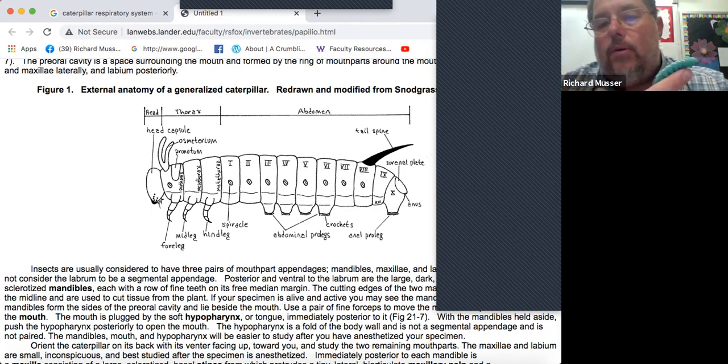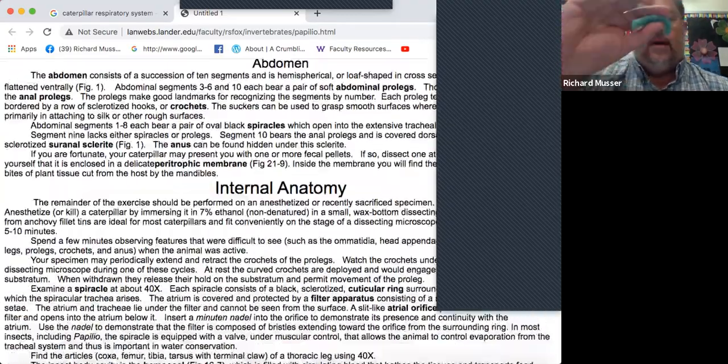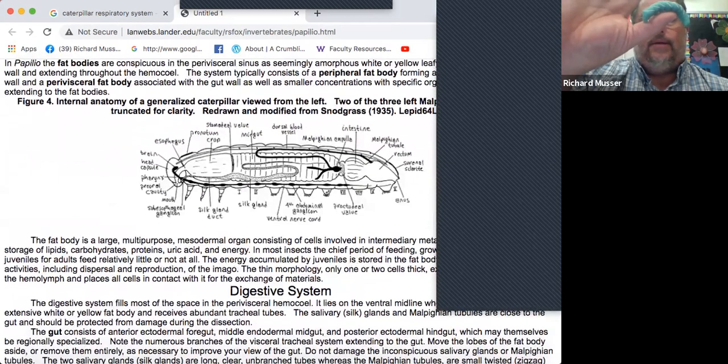The other thing I didn't mention located in the body is there's fat body, the white tissue that functions like the liver. So the Malpighian tubules function as kidneys and the fat body functions a bit like the liver. Those are the main things I wanted you to get from the anatomy of the caterpillar.